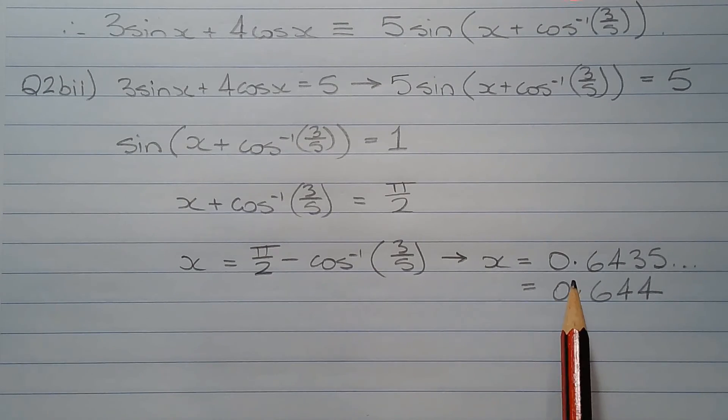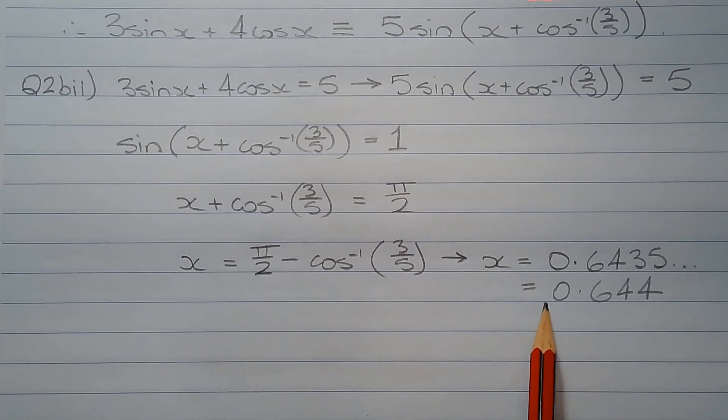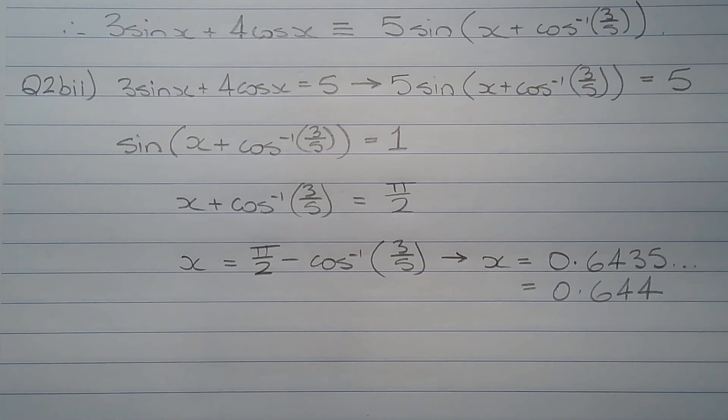x = 0.6435..., which rounds to 0.644, correct to three decimal places.